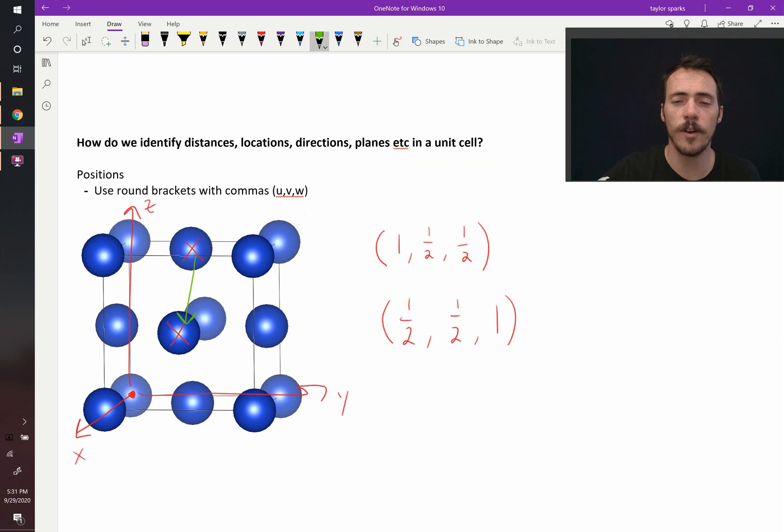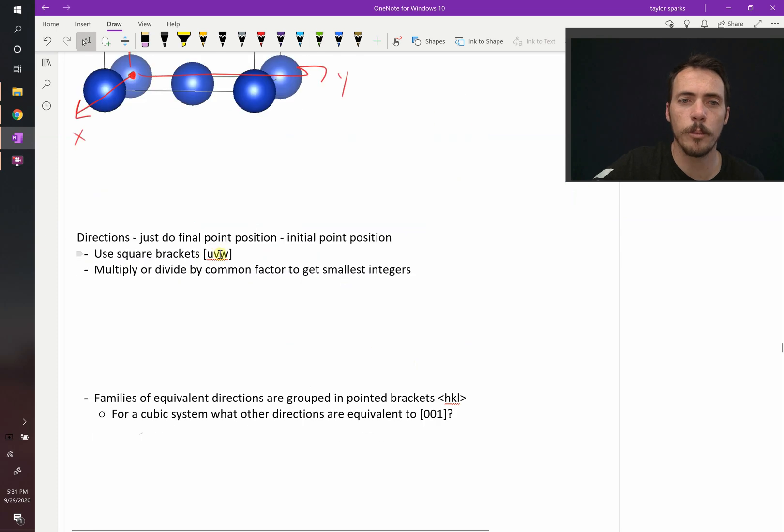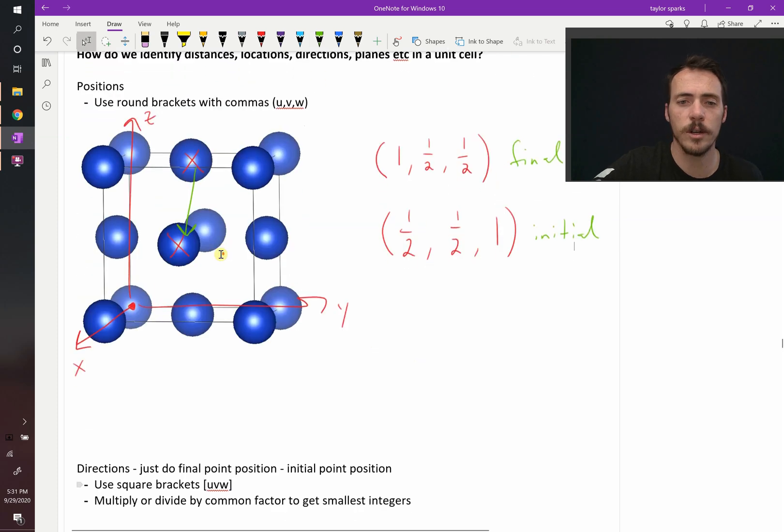We could take the final point. Alright, this was our final point. This was our initial point. So we could just subtract them from one another. And then you put it in square brackets with no commas. So let's go ahead and do that.